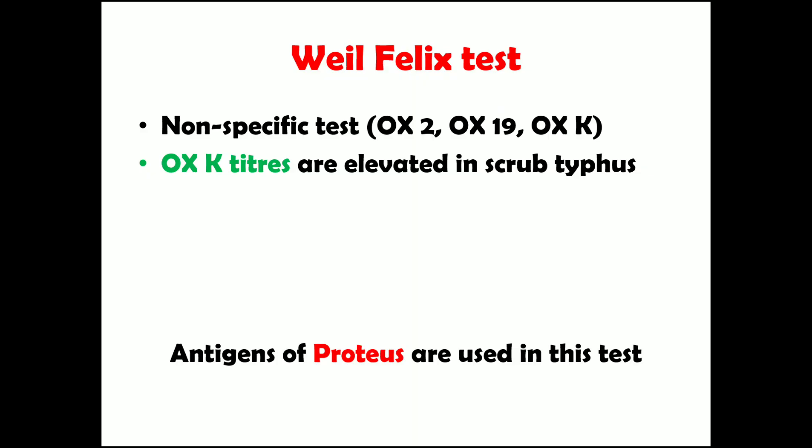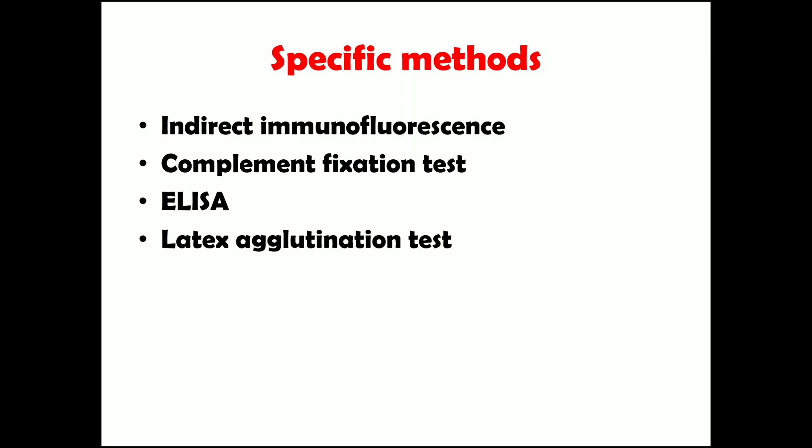In the Weil-Felix test, antigens of Proteus bacteria are used — it is a heterophilic agglutination test. The antigens OX2, OX19, and OXK used in this test are derived from Proteus. Interestingly, antibodies against specific rickettsial bacteria react against specific Proteus antigens; antibodies against Orientia tsutsugamushi act mainly against OXK, so OXK titers are specifically elevated in scrub typhus. Specific diagnostic methods include indirect immunofluorescence, complement fixation test, ELISA, and latex agglutination test.